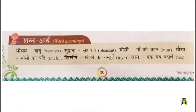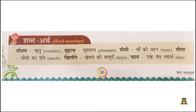Now shabdharg — word meanings. Mausam means weather. Suhana means pleasant. Mausi means aunt. Mausa means uncle. Khilone means toys. Chai means tea.